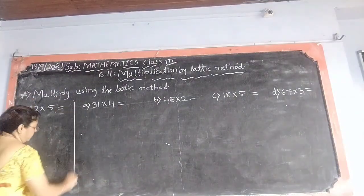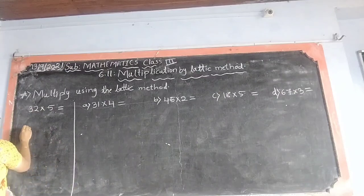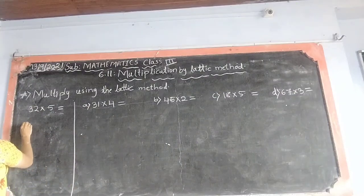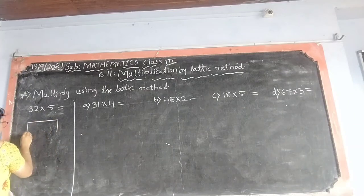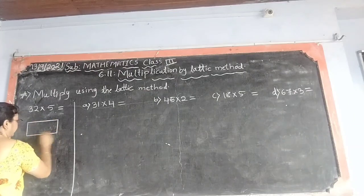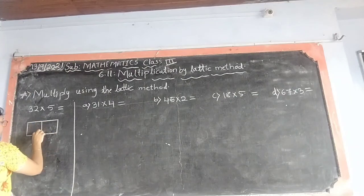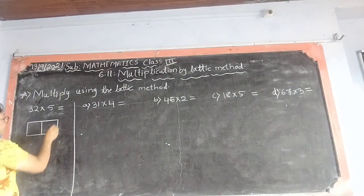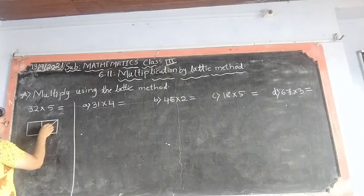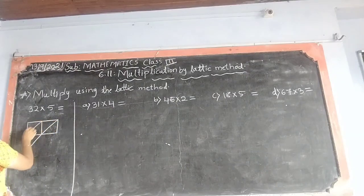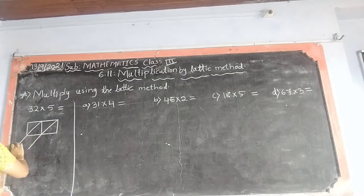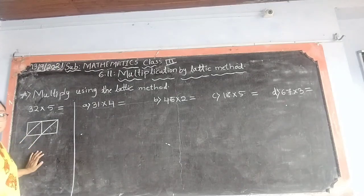For that, what we have to do, now see here, I am drawing a box. Like this and we have to draw one line in the middle. And from here, and from here to here. Like this you have to draw the box.